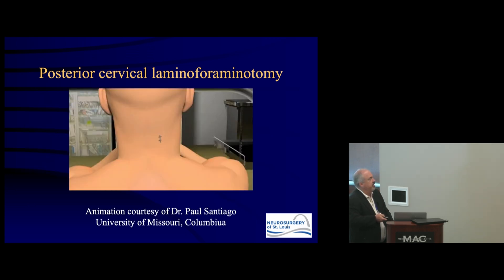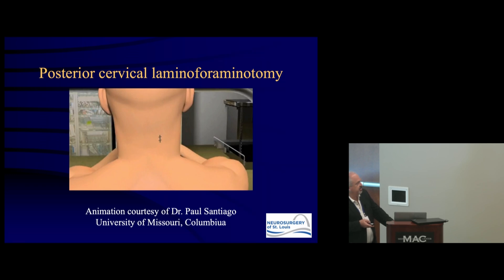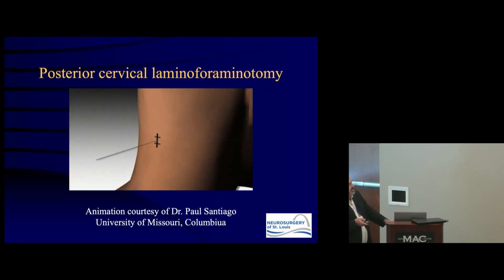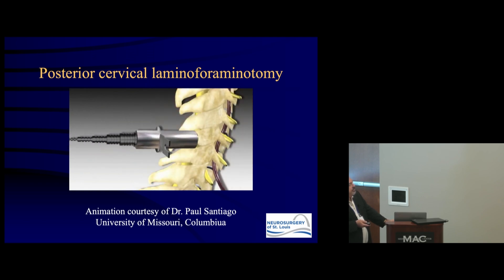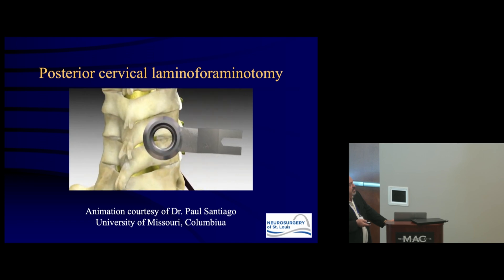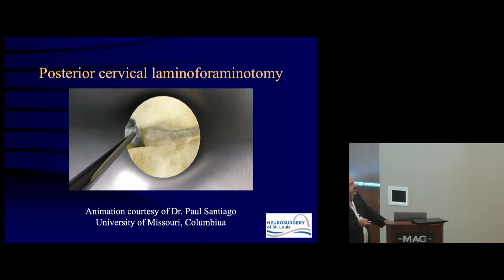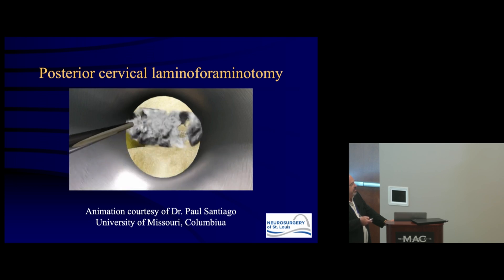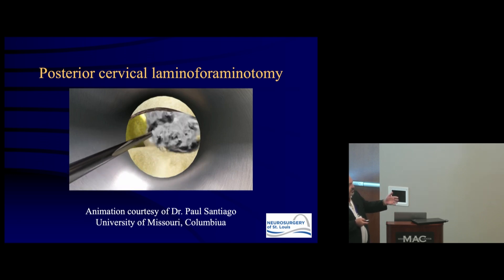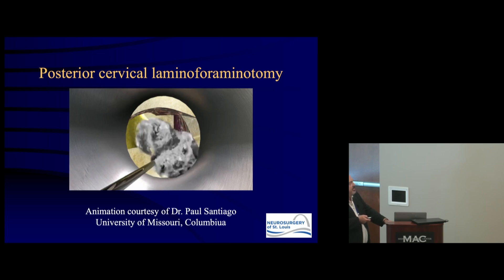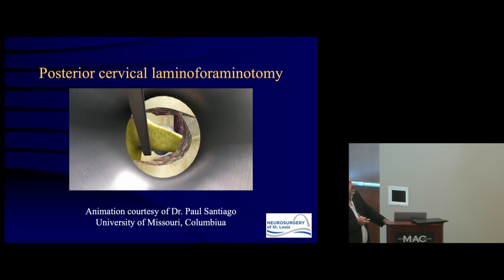For visualization, here is a 3D animation from my former partner Paul Santiago, now at University of Missouri-Columbia, showing a tubular approach for foraminotomy. The tube docks on the inferior facet. We're looking at the inferior facet, the superior facet, and the medial border at the edge of the spinal canal. The medial portion of the inferior facet is removed to visualize the superior facet, which is also partially removed along with some of the leading edge of the lamina to expose the exiting nerve root.